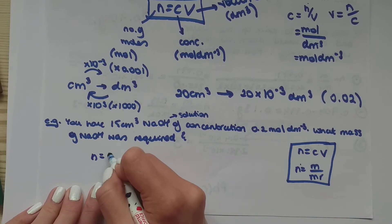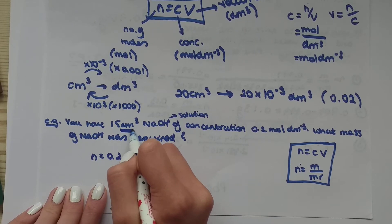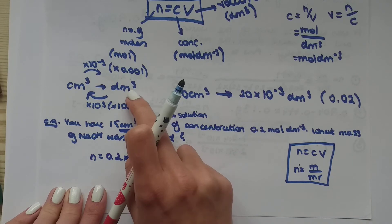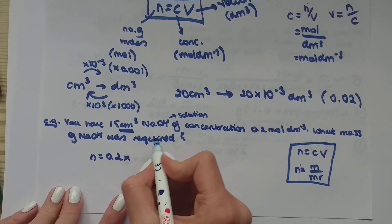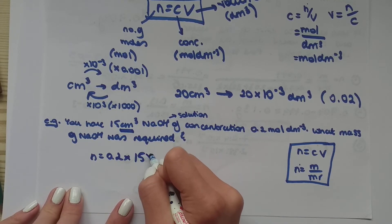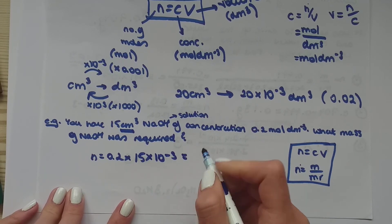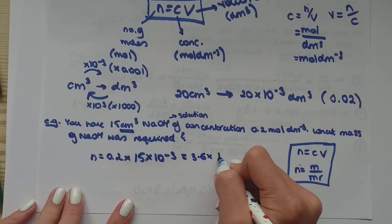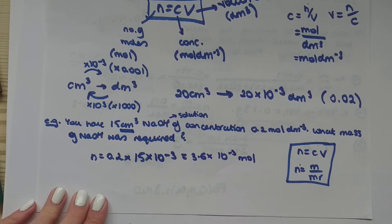So concentration is 0.2 and volume is 15. However, it's in centimeters cubed. So in order to change it into decimeters cubed, you have to multiply by 10 to the minus 3. So 0.2 times 15, which you have to multiply by 10 to the minus 3. And the answer to this is 3.6 times 10 to the minus 3 moles. That's the number of moles of sodium hydroxide.